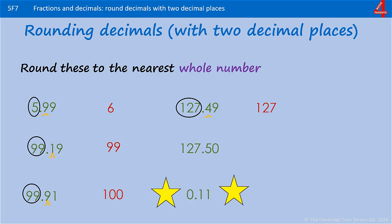127.50. This time, the whole number is 127, but there are 5 tenths, so we round it to 128.